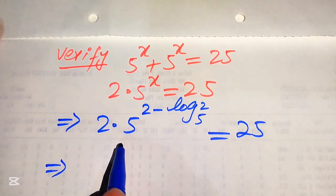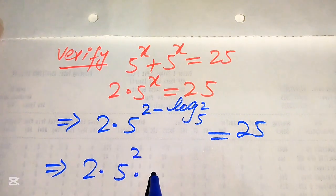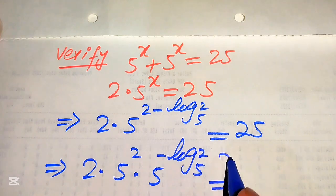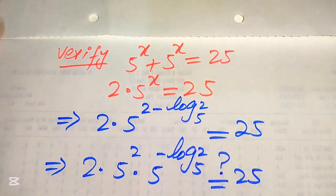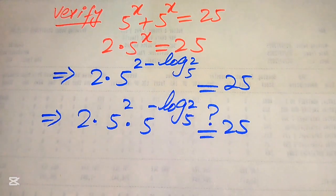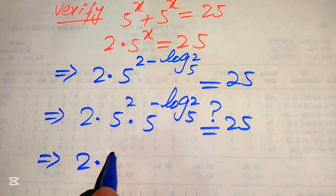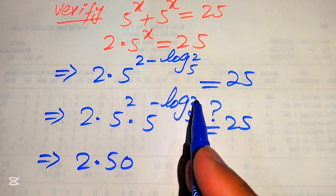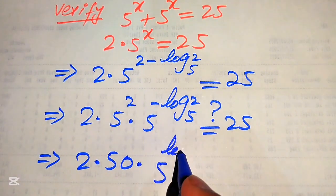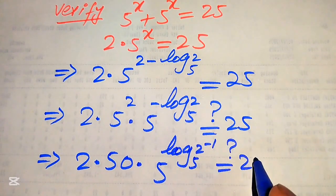In the next step, we break this exponent: it will be written as 2 times 5 squared into 5 to the power of negative log of 2 with base 5, and we check that this equals 25 or not. After further simplification, it will be written as 2 times 5 to the power of log with base 5, and 2 inverse.